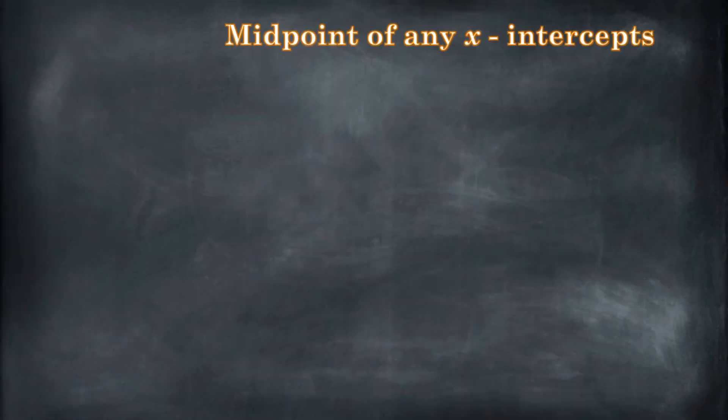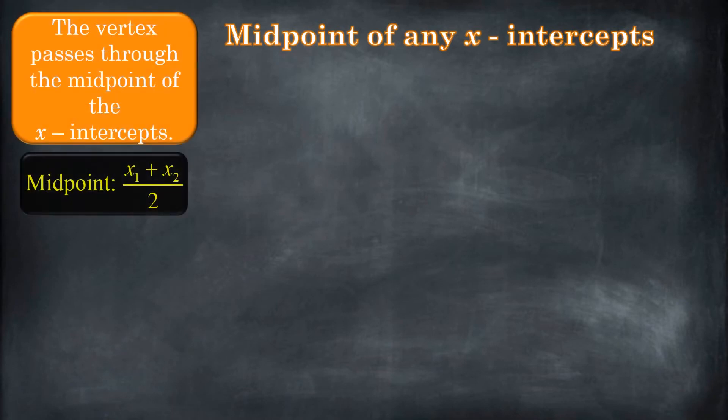So let's see if we can use that formula to find the midpoint of any x-intercepts at all. Here's the information we got. The vertex passes through the midpoint of x-intercepts, midpoint formula right here. Now, how do you find x-intercepts for any quadratic equation? Don't you use the good old quadratic formula? Now, here's the thing. This plus or minus means that there are two solutions.